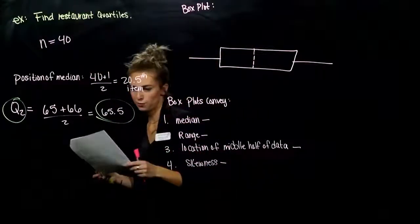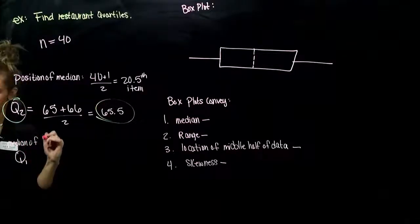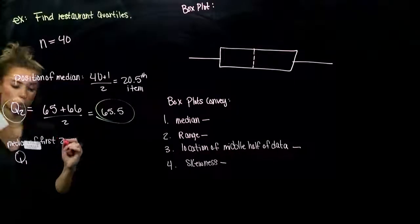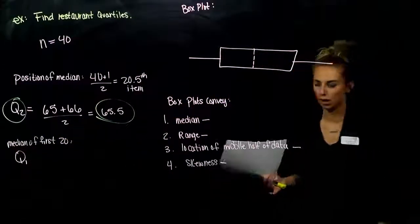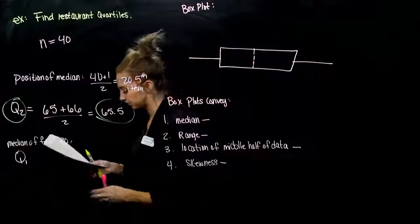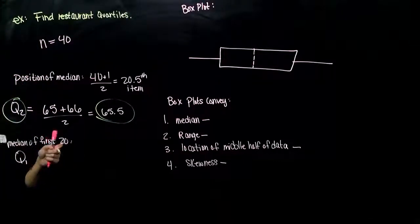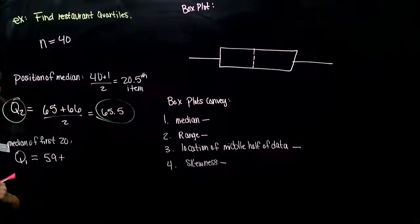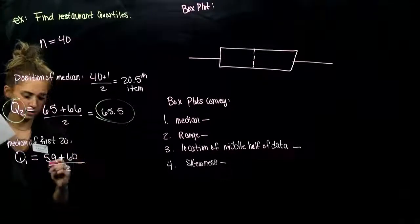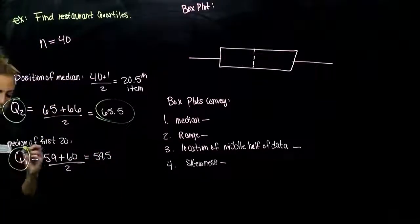Now for Q1: we're looking for the median of the first 20 items below Q2. Halfway between 20 is between the 10th and 11th items. The 10th item is 59 and the 11th is 60. We want the average of those two, so Q1 equals 59.5.